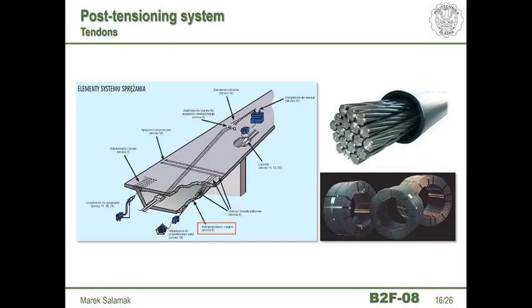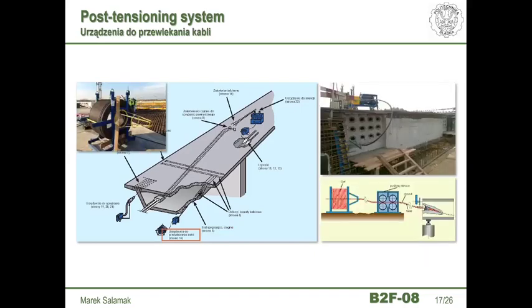Tendons are delivered to the construction site in the form of coils, and we insert them using a special threading device. Now imagine the situation that when adding the last tendon of a 19-strand cable, it turns out it can no longer be inserted — somewhere along the length of the duct was bent, or concrete got inside after burning. It is a serious matter and you cannot proceed without finding this place and breaking out the concrete. It takes a lot of time.